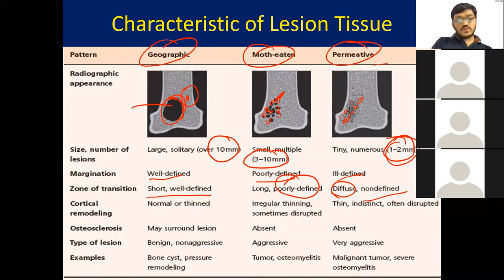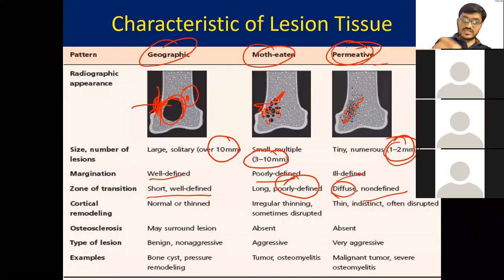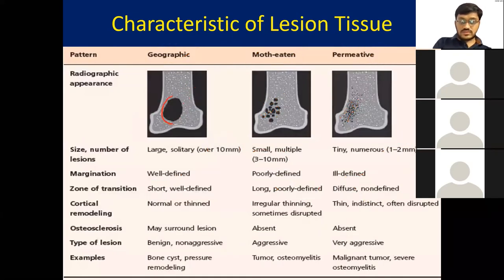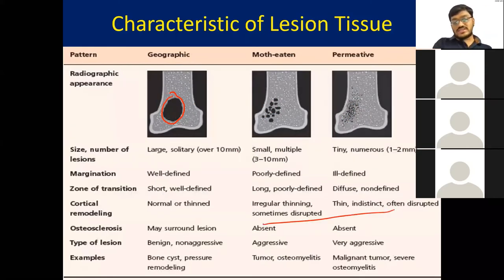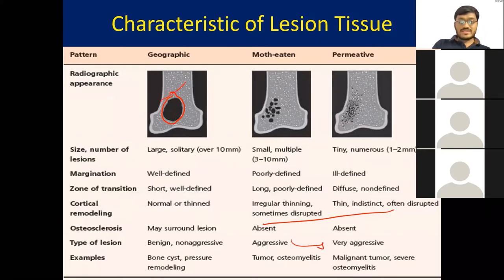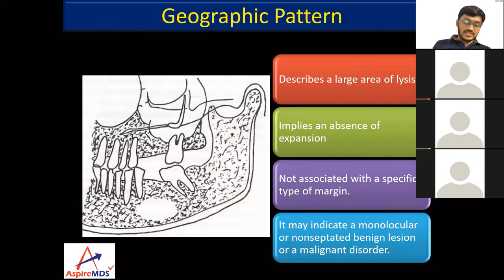For cortical remodeling: in the geographic type, the lesion causes thinning or displacement of bone while remaining intact; in the moth-eaten type, there is irregular thinning and even perforation; the same can occur in the permeative type. Osteosclerosis may be present surrounding the geographic lesion but is absent in the other two. Geographic lesions are usually benign cysts and tumors; moth-eaten and permeative types are aggressive to very aggressive, with permeative being characteristic of malignant lesions.